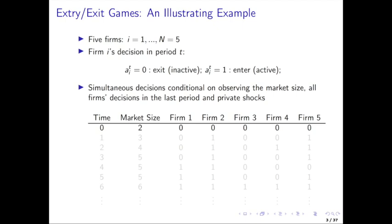Here's a game we're looking at — just an illustrating example. We have like five firms, indexed by i, so i goes from one up to N which is equal to five. Each firm makes a discrete choice every period: whether or not to be active in the market. If you're active in the market, then A_i_t equals one, where T is the period and I is the player. The action is either one if you're active or entering, or zero if you're inactive or exiting.